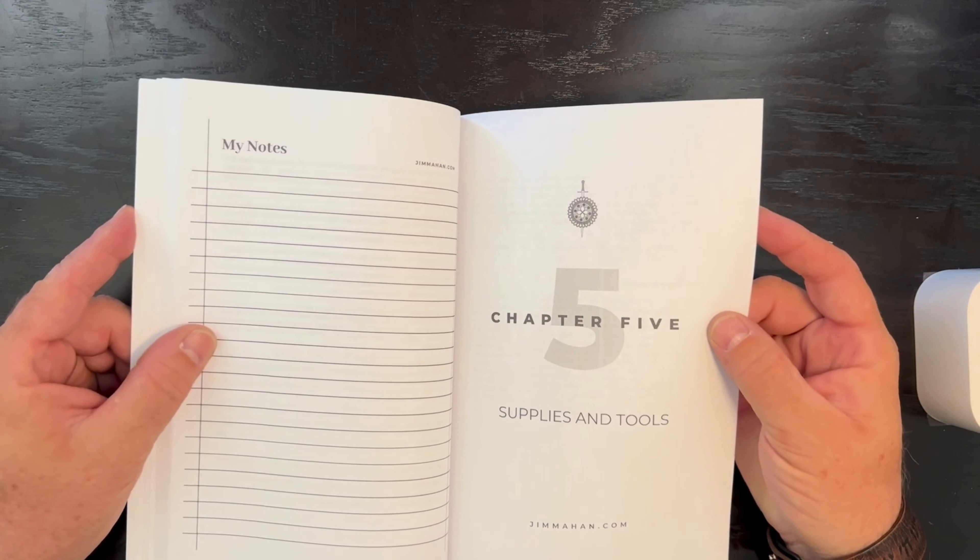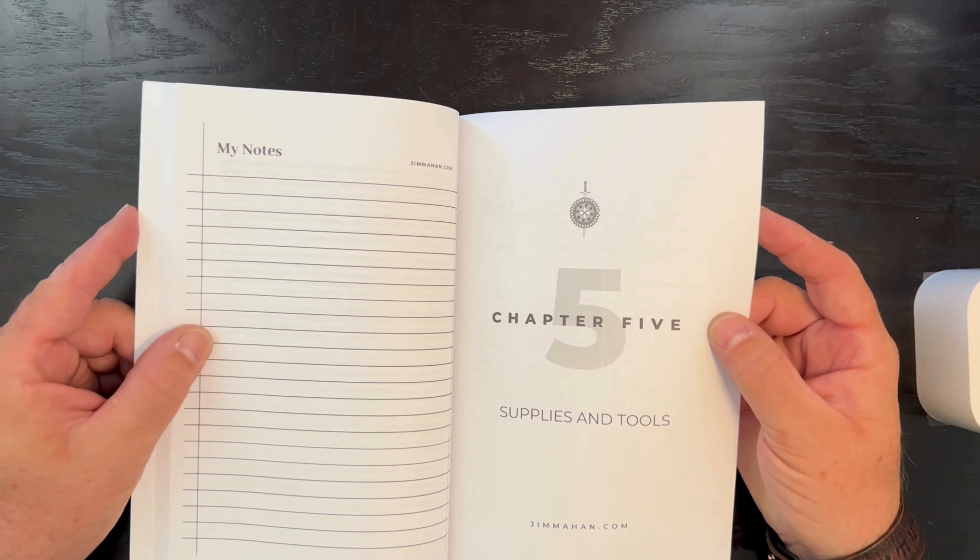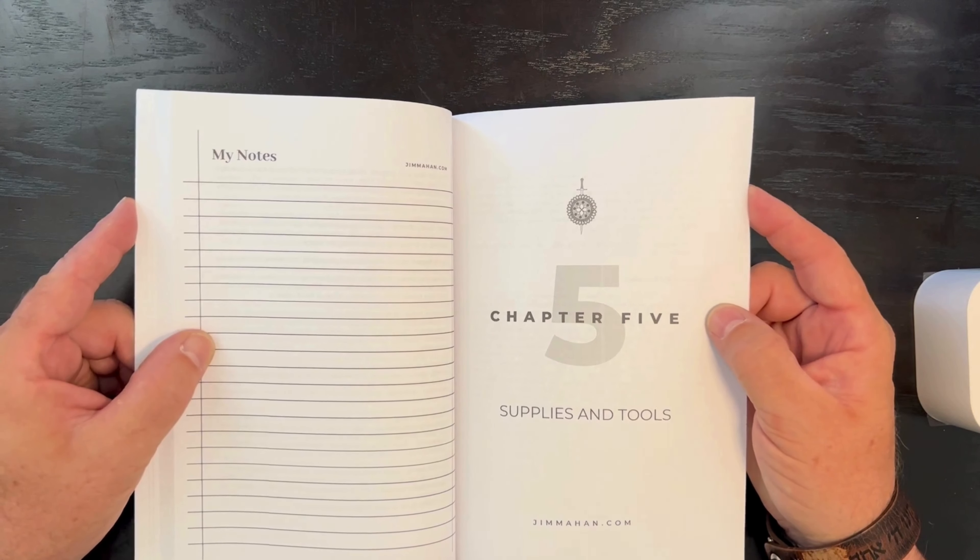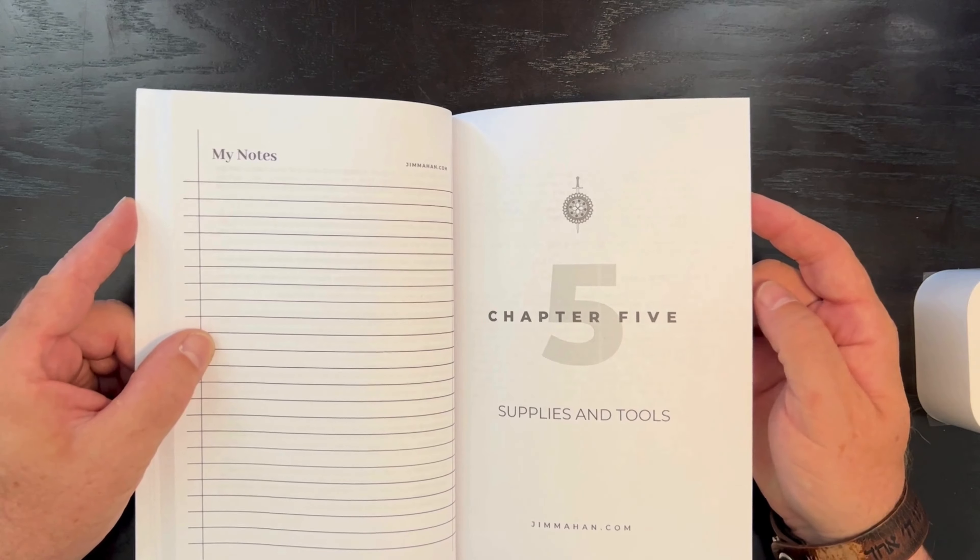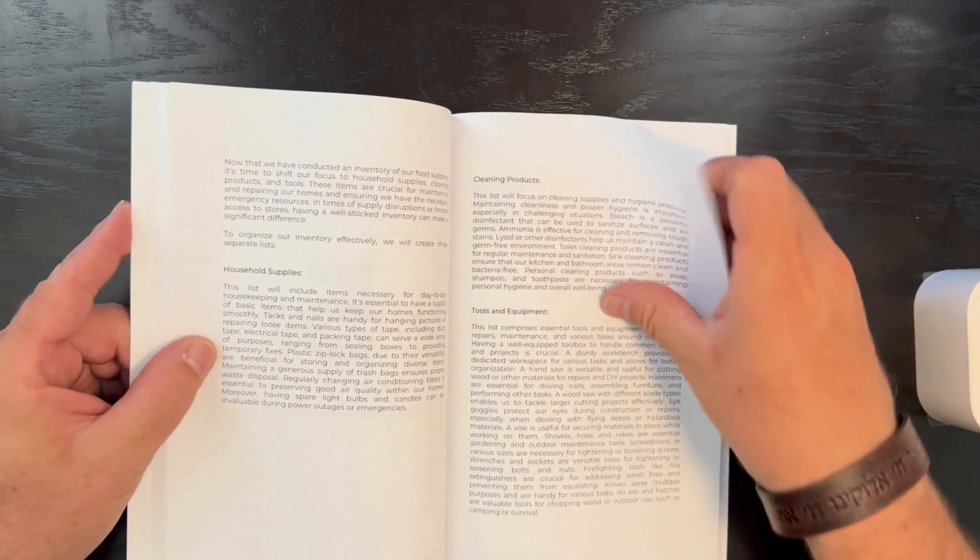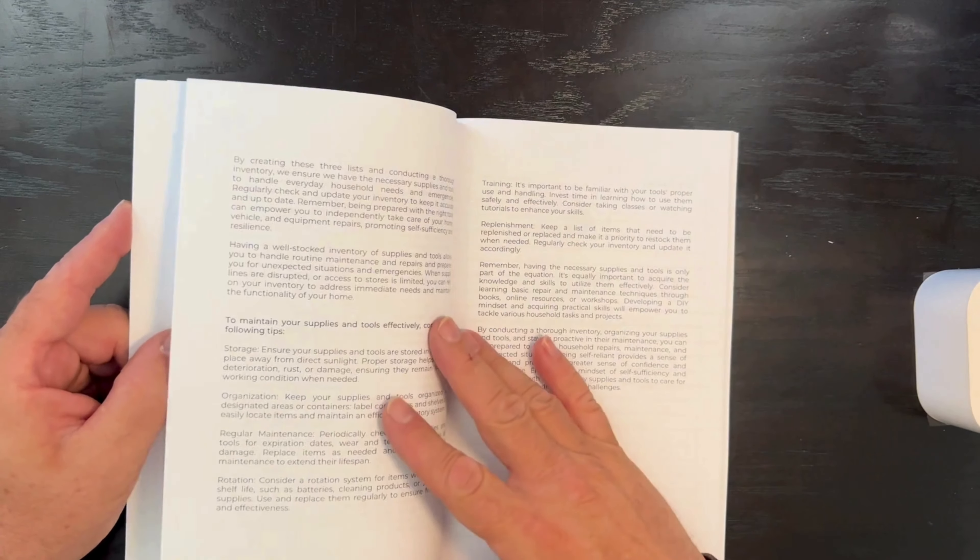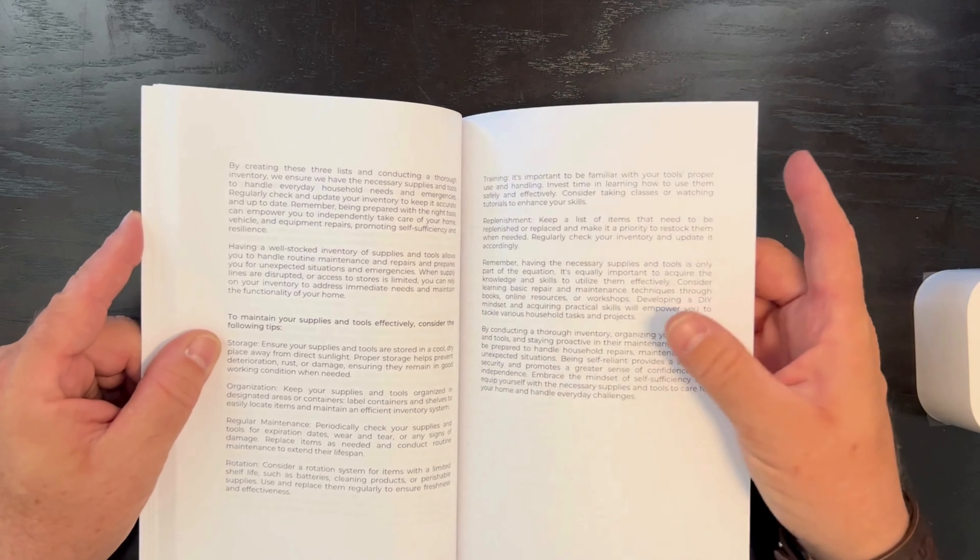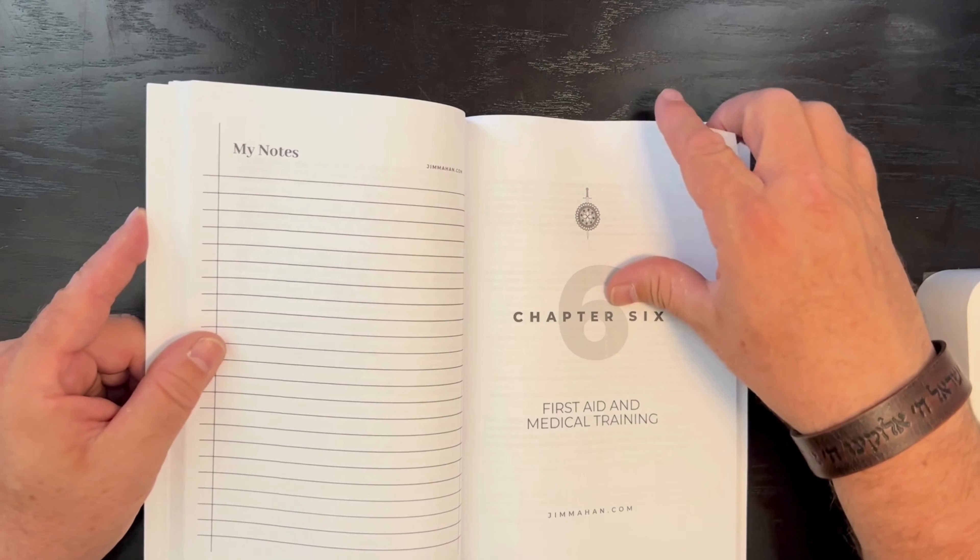Then afterwards, if there was a large natural disaster where we have to rebuild certain things in our life, do we have the tools and the supplies to do that? So we talk about going through our entire house from top to bottom and creating inventories and making lists of the things we have.